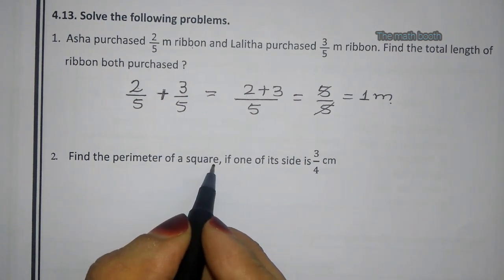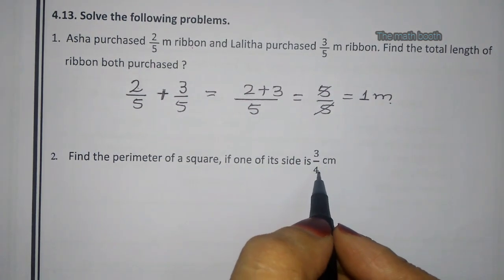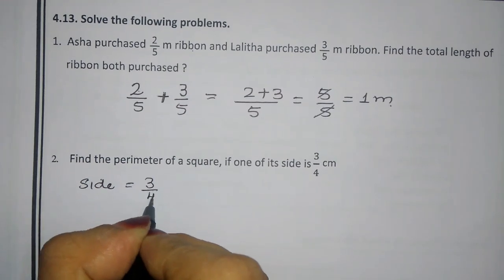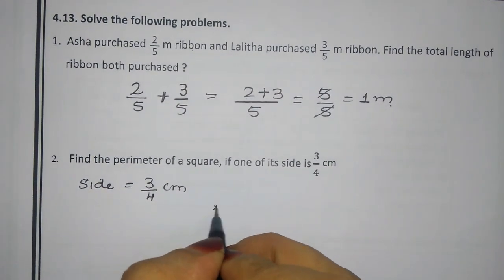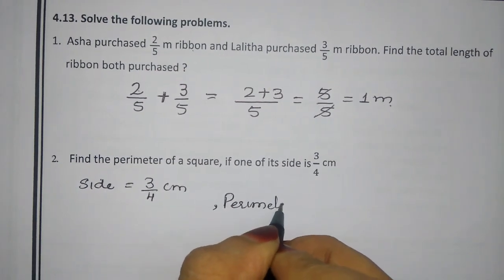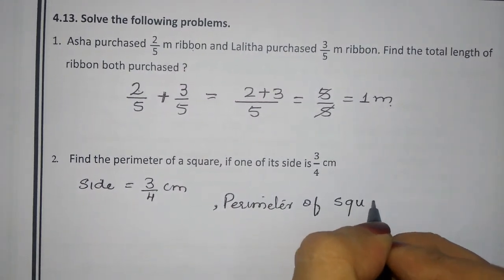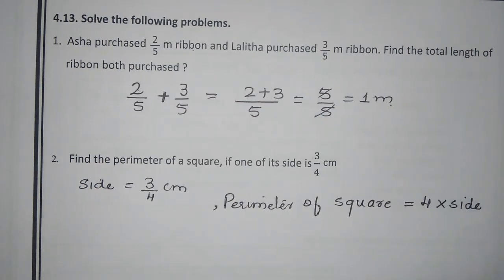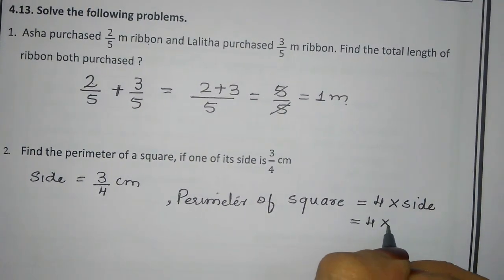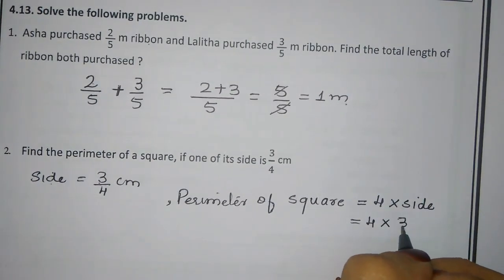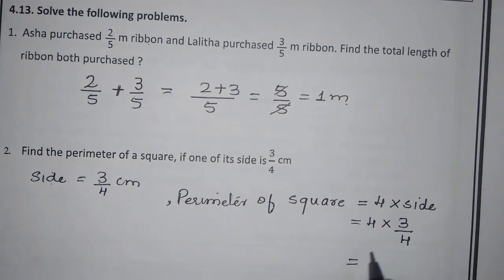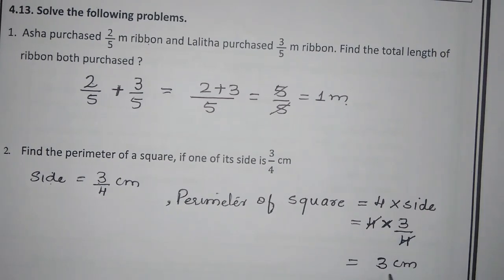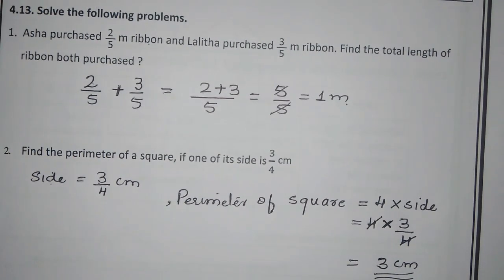Find the perimeter of a square if one of its sides is 3/4 centimeter. The perimeter of a square is 4 × side, so that is 4 × 3/4. The 4 in the numerator and the 4 in the denominator cancel, so the answer is 3 centimeters. The perimeter of the square is 3 centimeters.